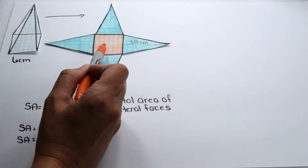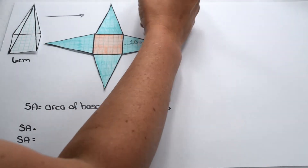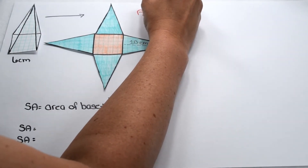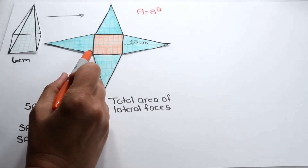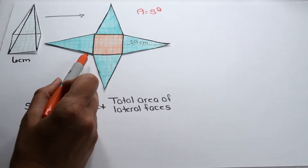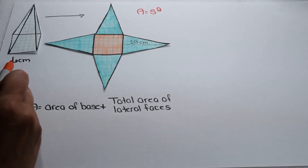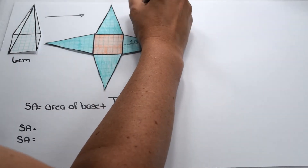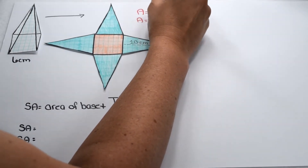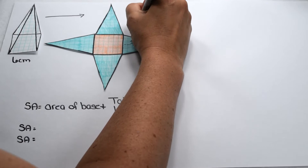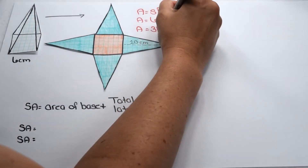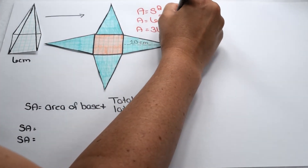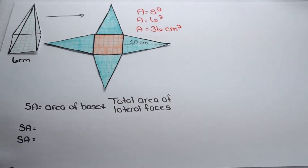To find its total surface area, we can start by finding the area of the base. Our base is a square, a regular polygon, telling us that all of its edges are the same length. So to find its area, we can simply do side squared, or 6 squared, since its edge is 6 centimeters long. 6 squared means 6 times 6, which is 36, so the area of our base is 36 square centimeters.